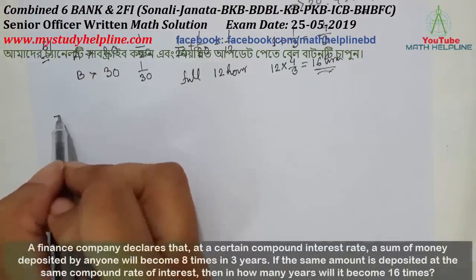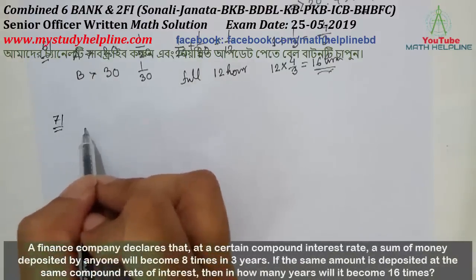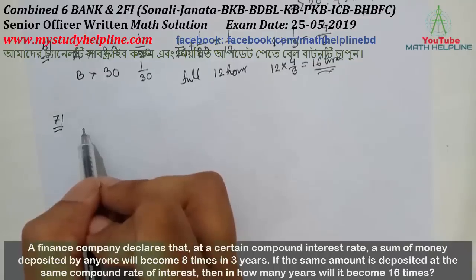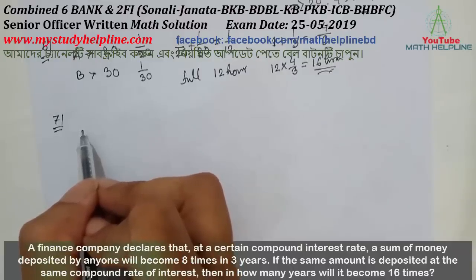Problem number 7: A finance company declares that at a certain compound interest rate, a sum of money deposited by anyone will become 8 times in 3 years. If the same amount is deposited at the same compound rate of interest, then in how many years will it become 16 times?